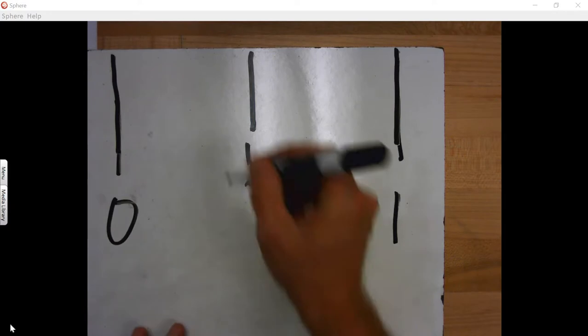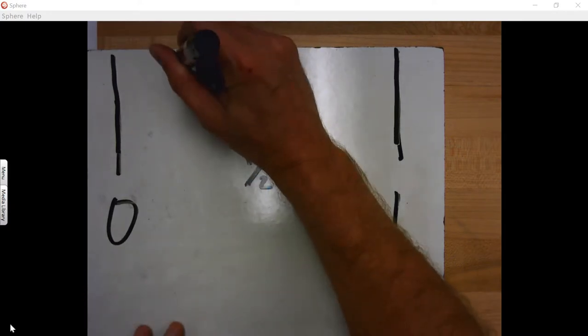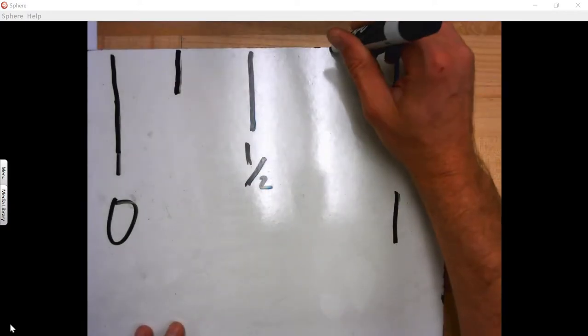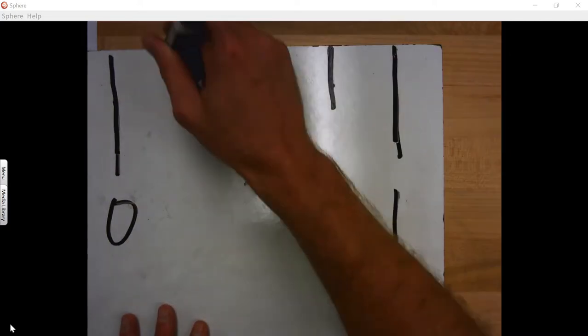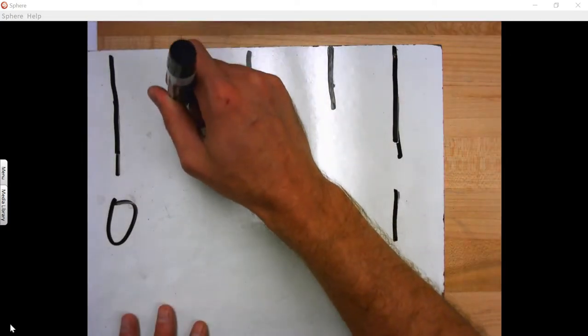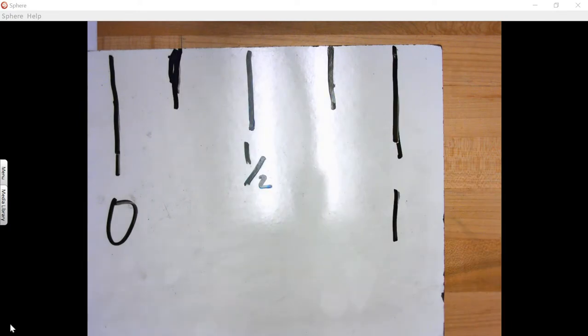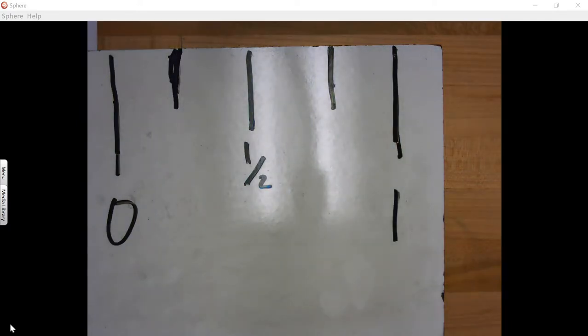So the next biggest segment after that is fourths. And why do we call it fourths? Anybody know? Why do we call it halves? Yeah, they're divided into two spots, right? So how many spaces are fourths divided into? Four spaces.